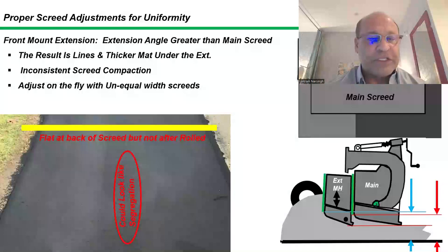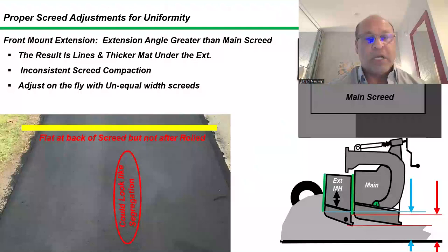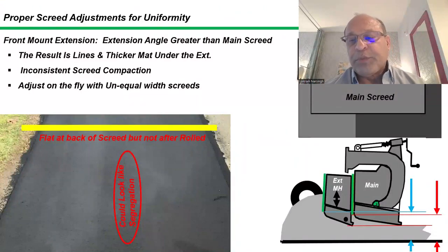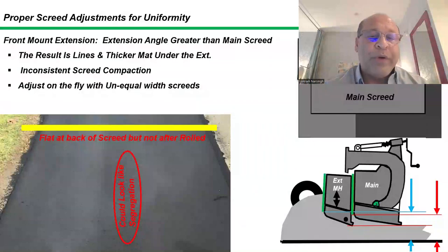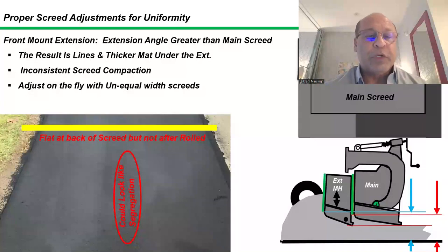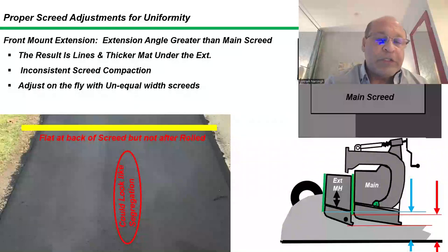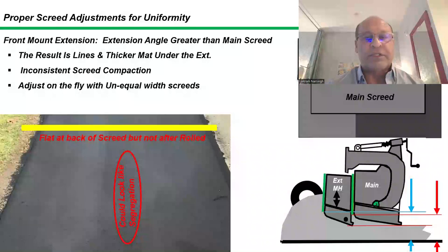Again, different surface texture, different blemish, different uniformity, but strictly from screed adjustment, not segregation. If you look at the leading edge of the extension blue line, between the blue line and the first red line is how much more material is getting compacted under the extension screed. So we may have 90% density under the extension, maybe 85% under the main. So we can push more air pockets out under the main screed when the roller comes by. And then if we put a straight edge after it's rolled, it will not be a flat pavement. It may appear to be segregation, but it's not — it's a surface blemish because of incorrect screed adjustment.